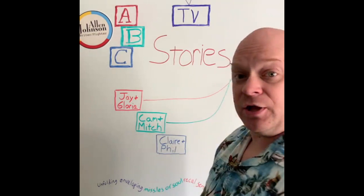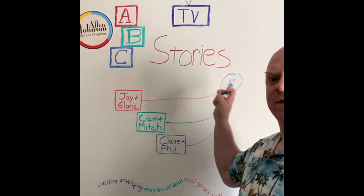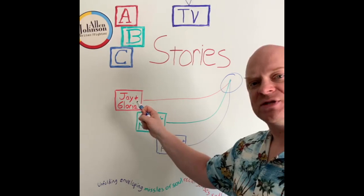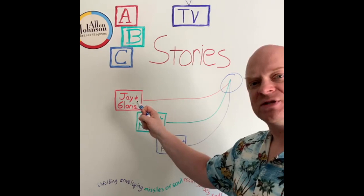Claire and Phil also go along the same path, and you want them all to hit the climax at the same time, with the B and C story influencing how the A story is decided. That's how A, B, and C stories might be used in the context of television.